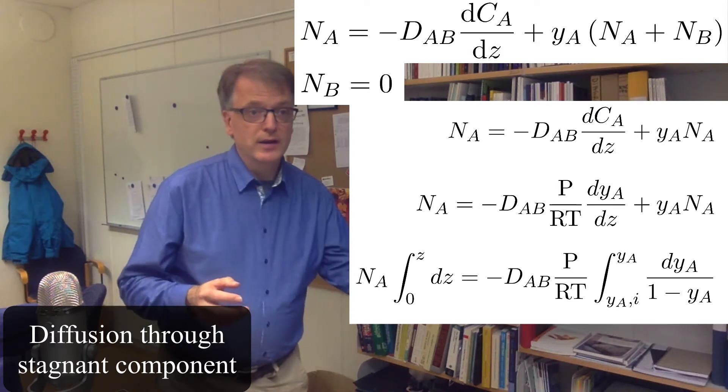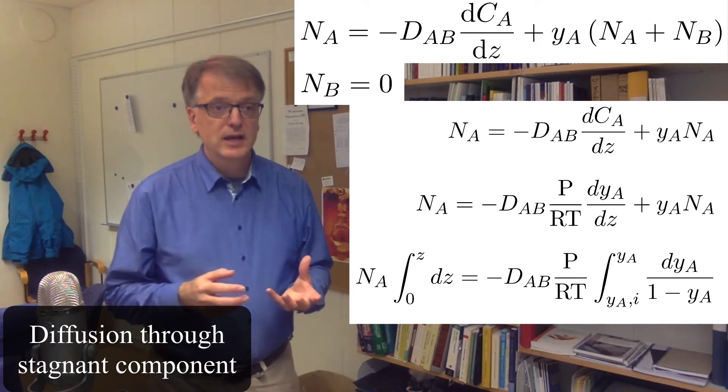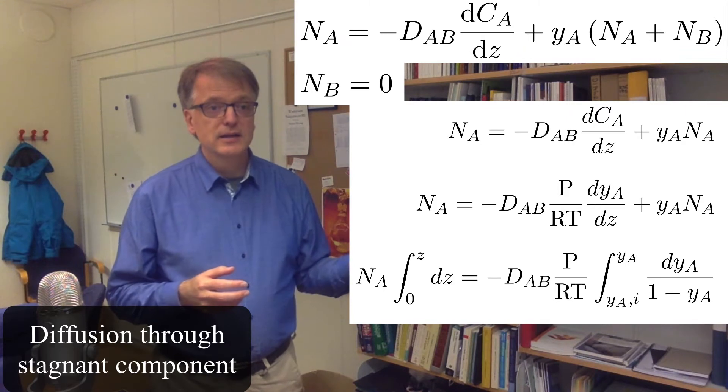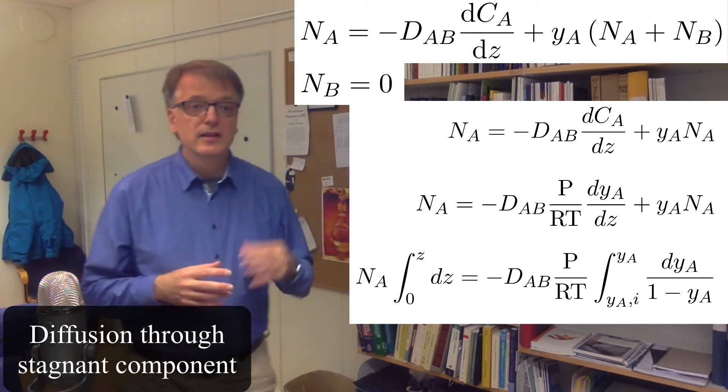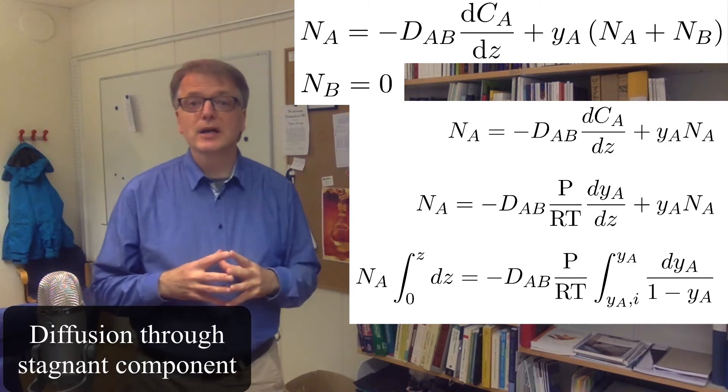And then we move yA to the other side and we get Na dz equals minus diffusivity times P divided by RT times dyA divided by 1 minus yA.